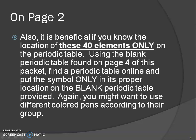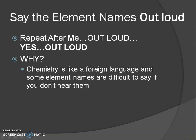You can use either one. You're going to put the symbol — and again, only the symbol — for only the 40 elements in its proper location on the blank periodic table. You might want to use different colored pens according to the group. You can either write the symbols in those colors, or shade that area in color and write the actual symbols in black. It's up to you how you want to do that.